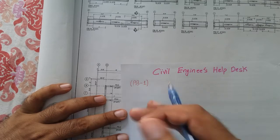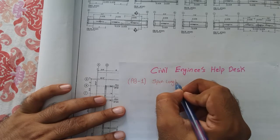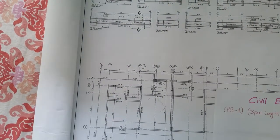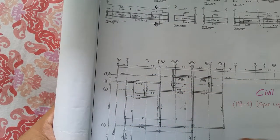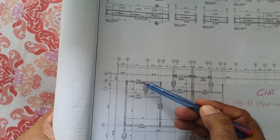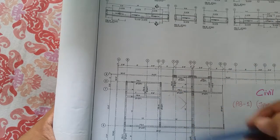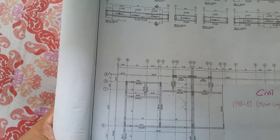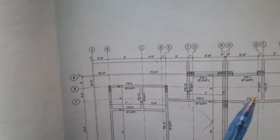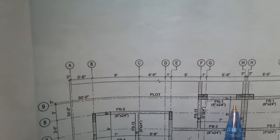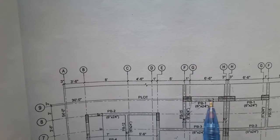The first step for calculating the bar bending schedule for PB1 is to know its span length. To find it, you must first locate PB1 on the plan. Here is PB11, this is PB4, this is PB2, and here is PB1. First, find where PB1 is, then check whether there is only one PB1 or more. I confirmed there is only one PB1 in the whole house.